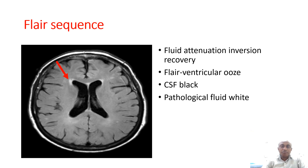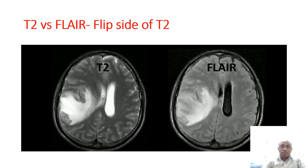FLAIR sequence is the flip side of T2. It is Fluid Attenuation Inversion Recovery. To identify FLAIR, you can see the ventricular ooze — CSF looks black, ventricles look black. Most pathological fluids look white. So in T2, CSF, ventricles, and pathological fluids all look white, but in FLAIR, pathological fluid looks white while CSF looks black.